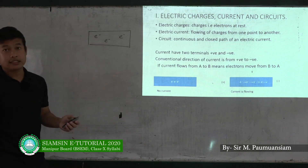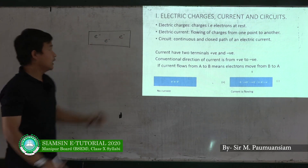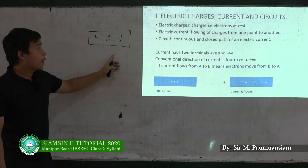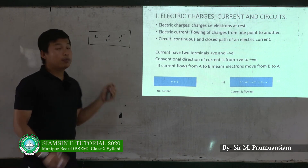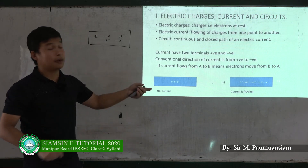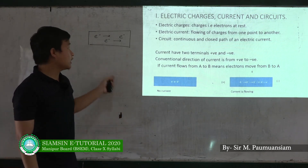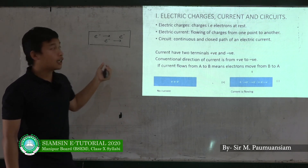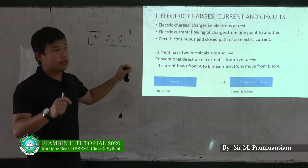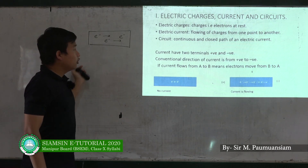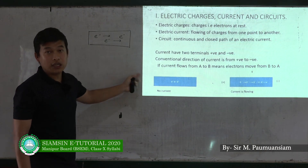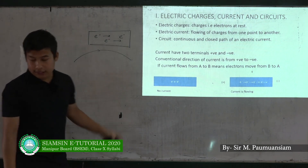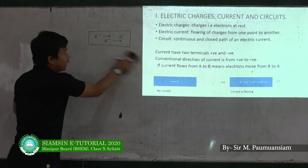Electric charges: if you have a move, you can travel with an electric current. You can see that the current is flowing. When a current is not flowing, current is applied to the electric charges. The current is flowing and we are in the power of power stations. At the circuit, the electric current is flowing.